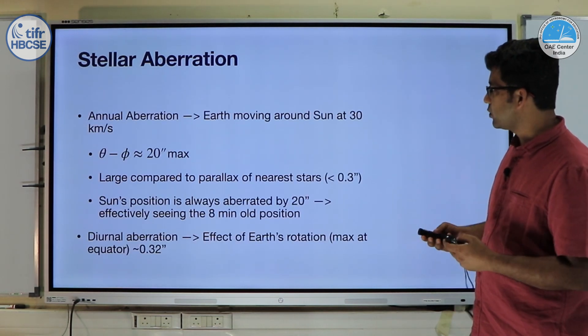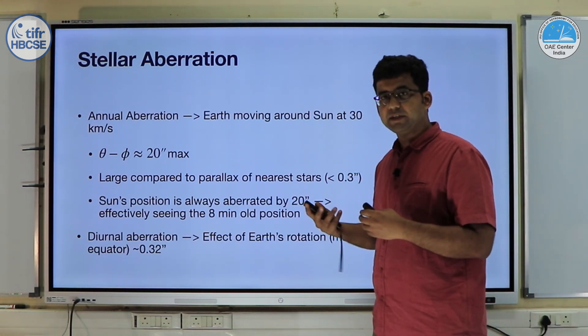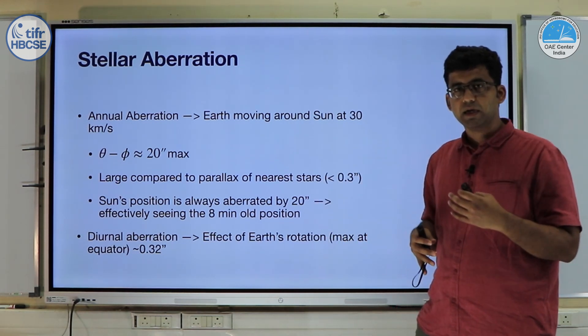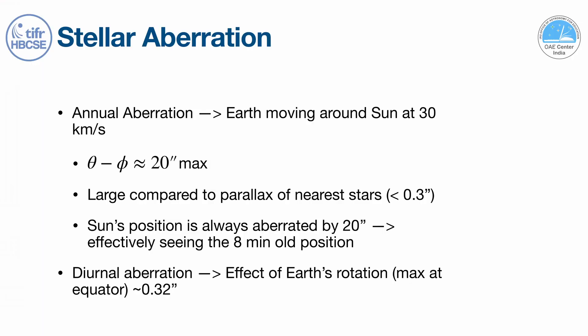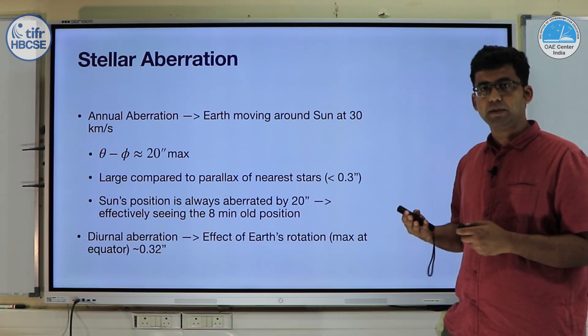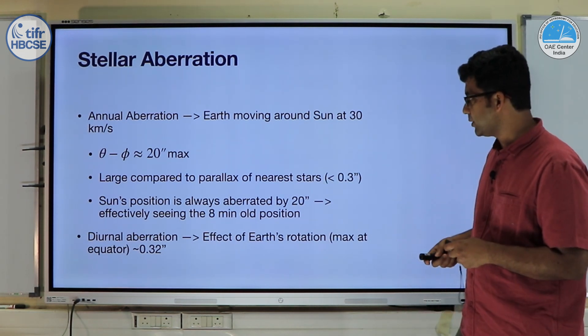Now this of course is quite large. The annual aberration because of Earth moving around the sun at 30 kilometers per second is about 20 arc seconds. Now that 20 arc seconds is very large compared to the parallax which we see for even the nearest stars. The nearest stars are at about 3 parsec distance and that parallax corresponds to about 0.3 arc seconds which is much much smaller.